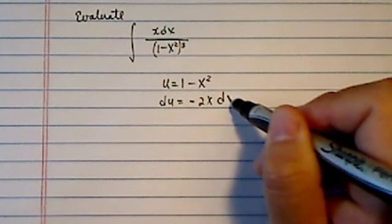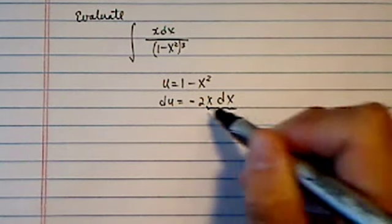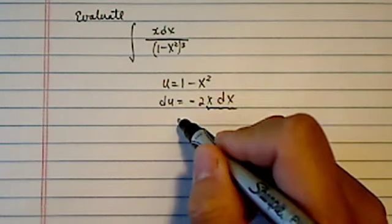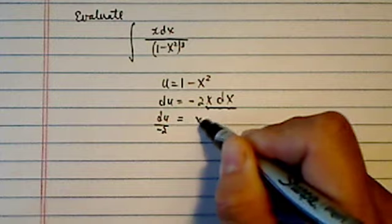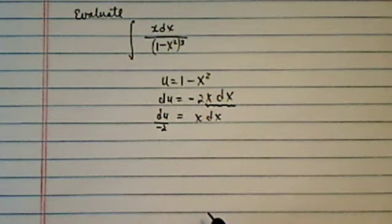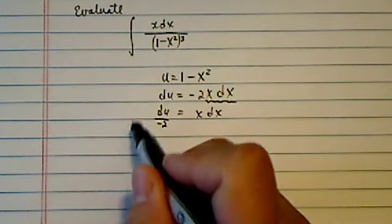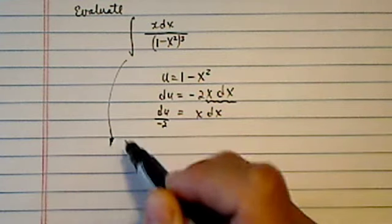Minus 2x dx is what I have here, since I'm going to substitute x and dx. I'm going to just do a du divided by minus 2 is equal to x dx. From there, the rest of the stuff is pretty easy, and we just have to watch our steps.